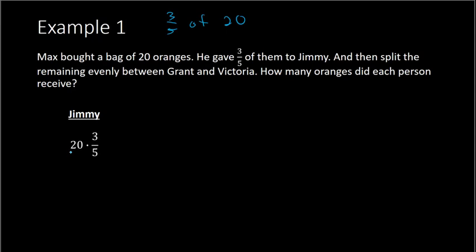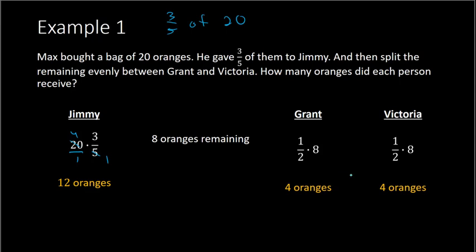When you multiply, you can think of 20 as being 20 over 1, and then the 20 and 5, you can divide both by 5 to get 4 and 1. So now we have 4 times 3 over 1 times 1, which would give you 12 over 1, or 12. So Jimmy was given 12 oranges. Once he gave 12 to Jimmy, he now has 20 minus 12, which is 8. So he has 8 oranges remaining, and then it said he split those remaining oranges between Grant and Victoria evenly. So basically just divide the 8 by 2. 8 divided by 2 is 4. Both Grant and Victoria received 4 oranges, and Jimmy received 12.